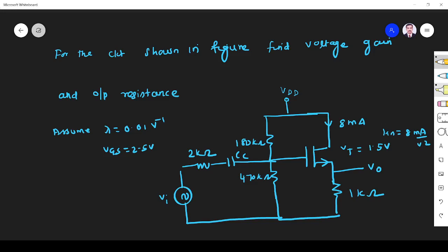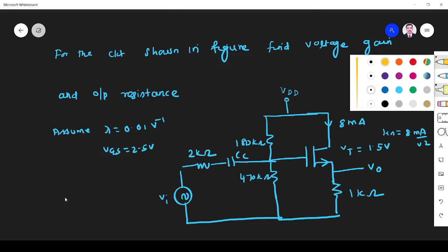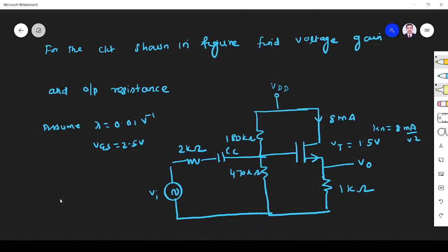Hi friends, in this video I will solve problems related to common drain amplifier. The question is for the circuit shown in figure, find voltage gain and output resistance.